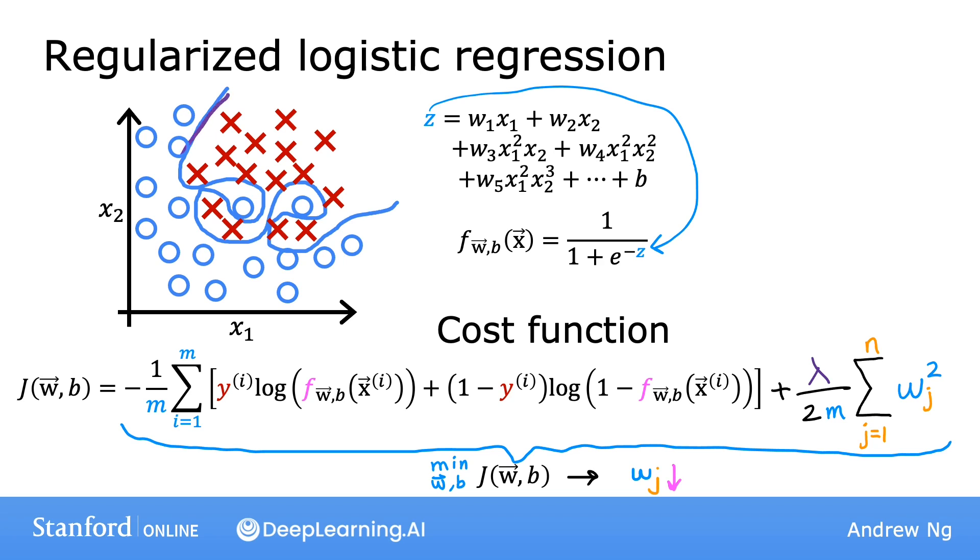If you do this, then even though you're fitting a high-order polynomial with a lot of parameters, you still get a decision boundary that looks more reasonable for separating positive and negative examples, while also generalizing, hopefully, to new examples not in the training set.